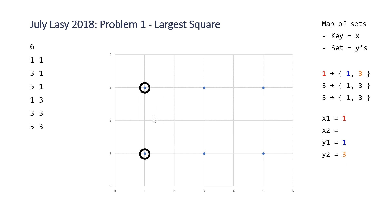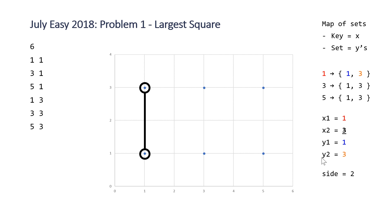Now we have half of the points we're looking for in our square, and we can figure out the rest from just this information. We can calculate the side length, which is going to be equal to 2 — just 3 minus 1. And then we can calculate x2 by just adding the side length to x1. Because this is a square, all side lengths are equal, so x2 equals x1 plus side, giving us 3. Now that we have all four coordinates, our next two points are (x2, y1) and (x2, y2), and we can see that this forms a square visually.